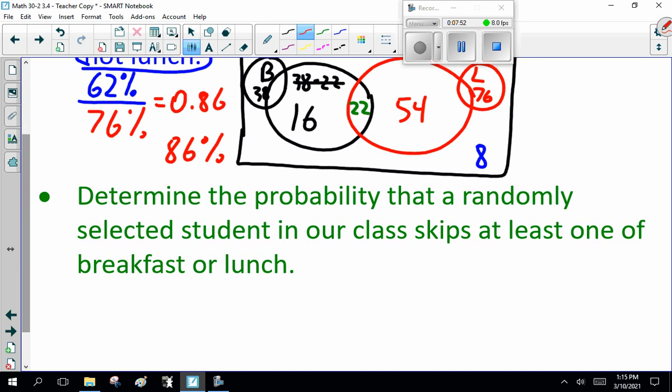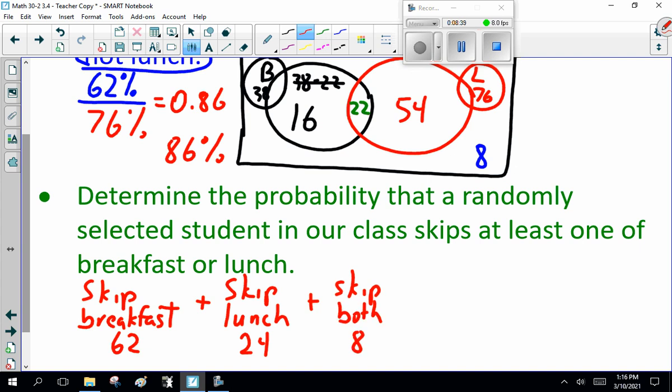Now, determine the probability that a randomly selected student in the class skips at least one of breakfast or lunch. Skip breakfast: 62% skip breakfast. Skip lunch: 24% skip lunch. Now, how many skip both? 8%? The total? 94% skip meals.